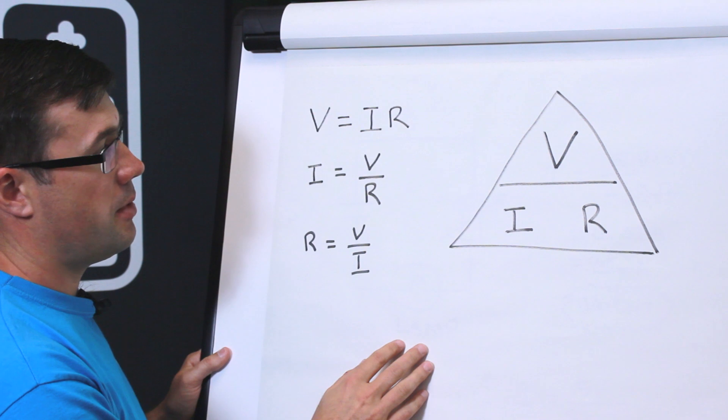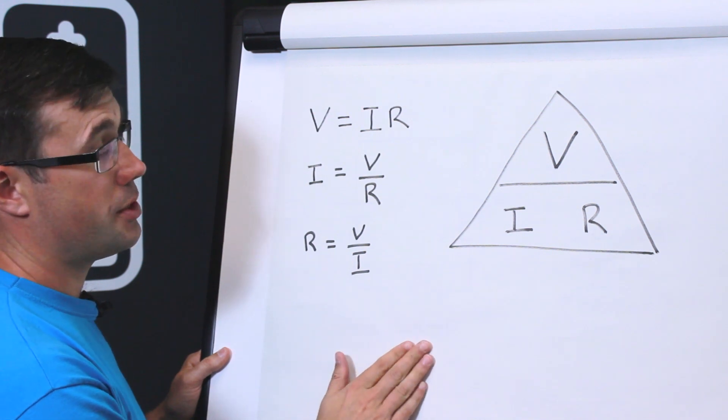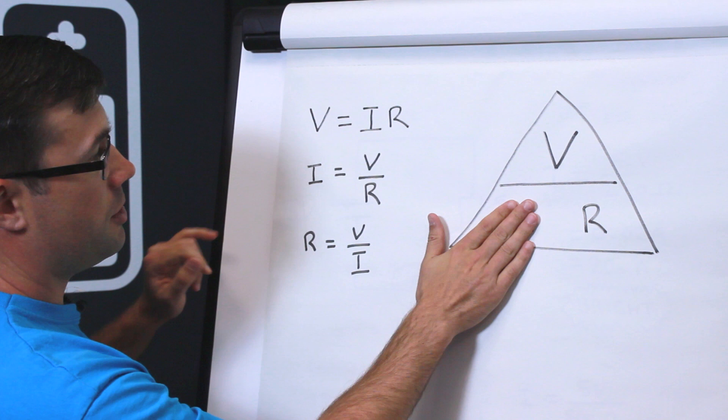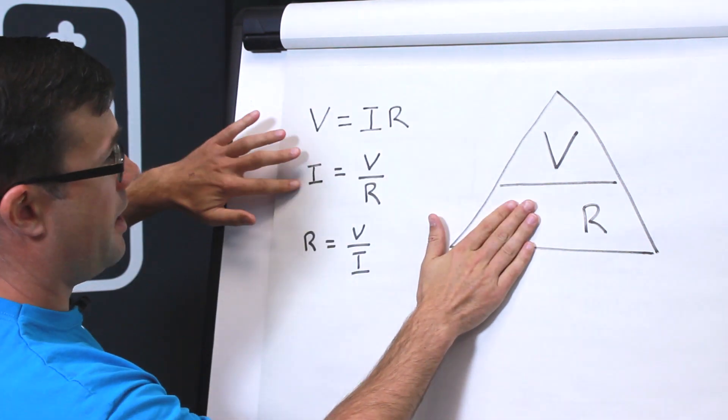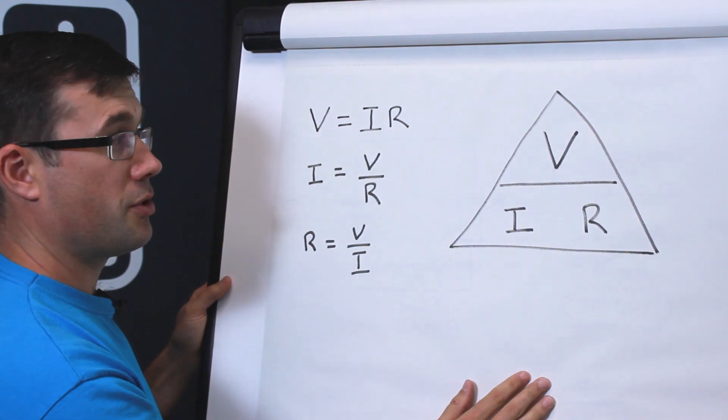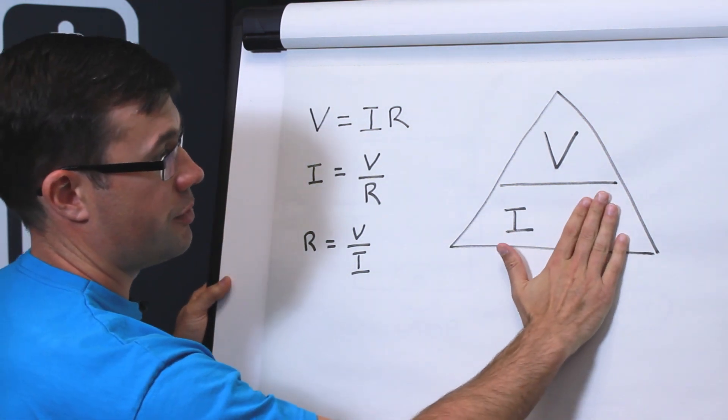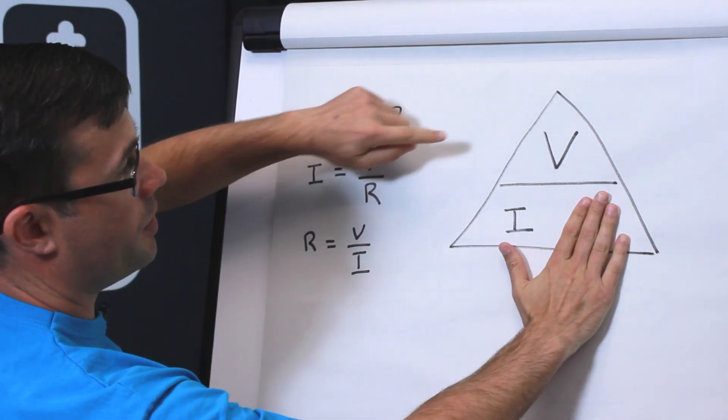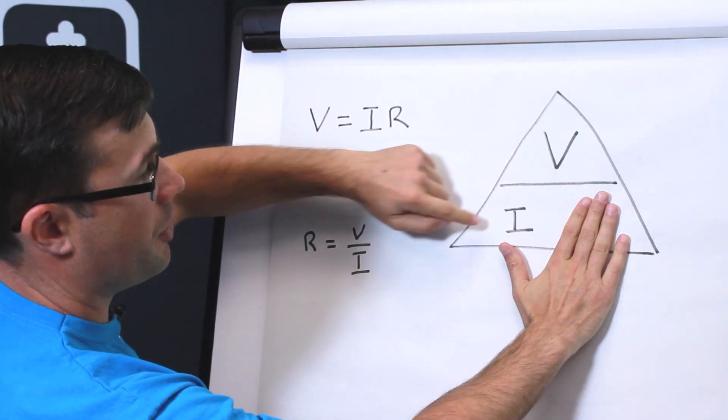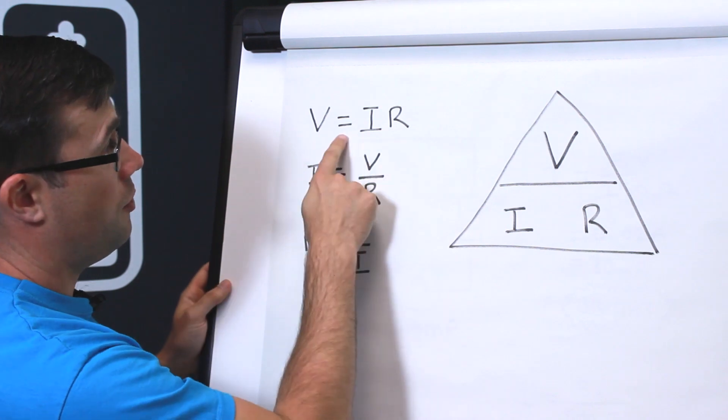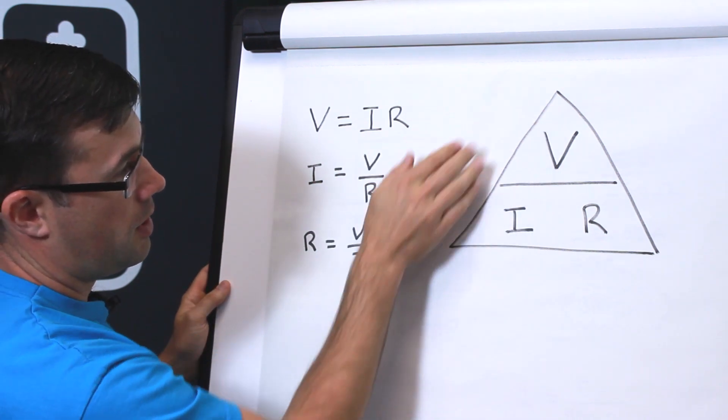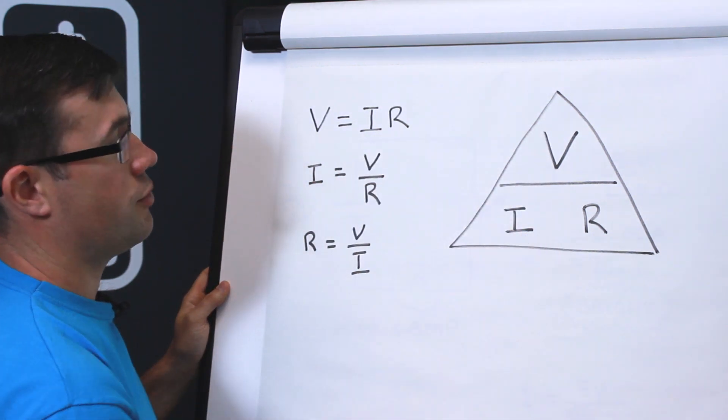And if we want to remember how to calculate the current we simply cover the current up and it reminds us that we need to divide the voltage by the resistance as shown here. And if we want to calculate the resistance we cover the resistance up and it reminds us that we need to divide the voltage by the current as shown here. We already know that voltage equals current times resistance.